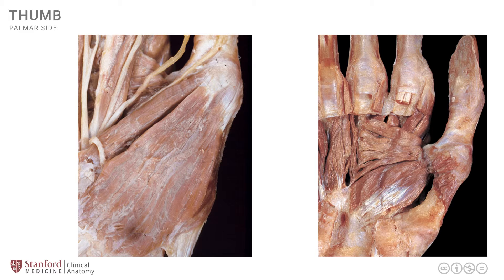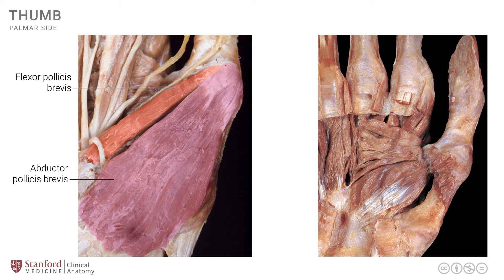Looking at the dissection photograph, the left side shows a superficial dissection close-up view of the base of the thumb. We see the flexor pollicis brevis, which is a much smaller muscle compared to the abductor pollicis brevis, both clearly visible as part of the superficial arrangement. Also very clearly seen is a branch from the median nerve known as the recurrent branch, which supplies these muscles and is an important innervation to identify in anatomical dissections.